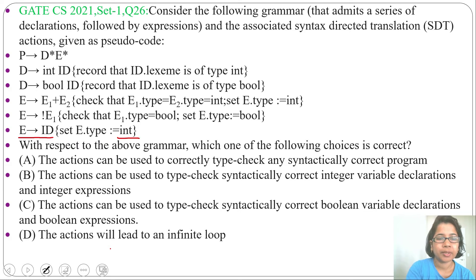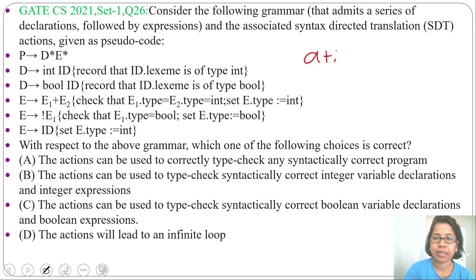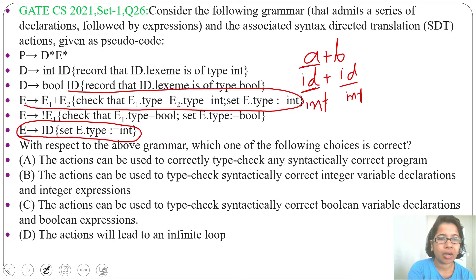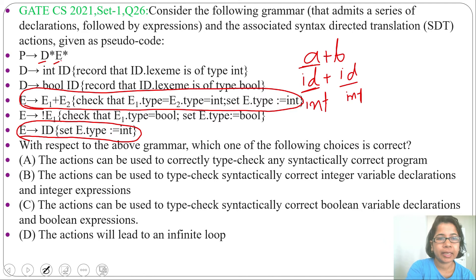So we can do arithmetic operations only on integers. You can see this statement: E1.type equals int, E2.type equals int, then set E.type equal to int — meaning we can do addition only on integers, not on booleans. Suppose you want to evaluate a plus b: 'a' corresponds to id and 'b' corresponds to id, so both ids must be integers for the addition to work. This id cannot be boolean. D will generate both integer and boolean data types, but E will do addition only on integers, not on booleans.